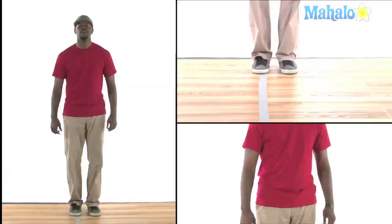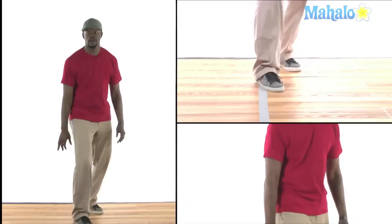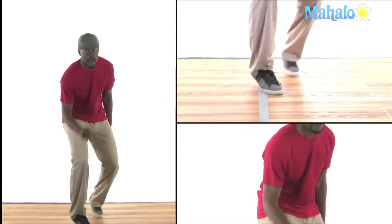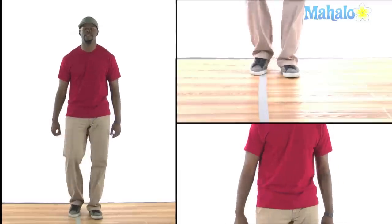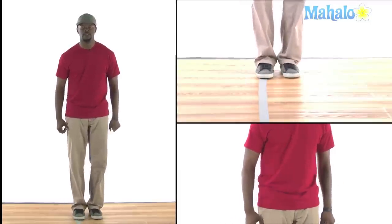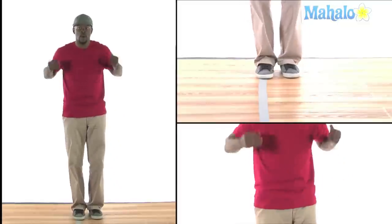Alright, so this right here, that's going to be our prep. The Skeeter Rabbit is actually this move right here. Alright, so your first step is the prep to get you ready. So we are just going to go pick it up and bend. So it's like one, two.